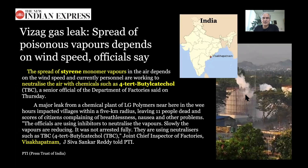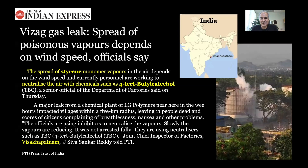You can see coming out of this huge tank there's some sort of vapor — I assume that's the styrene, maybe it overheated. Styrene is not a gas normally at room temperature, but they noted that the spread of styrene monomer vapors in the air depends on wind speed. Personnel are working to neutralize the air with chemicals such as 4-tert-butyl catechol, and that caught my interest, because it's not just that they've got this toxic compound — certainly toxic at high concentrations — leaking into the air, but they're trying to do some chemistry in the air.